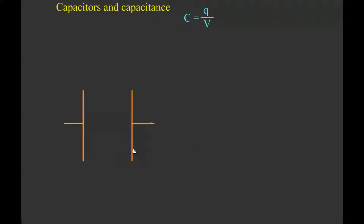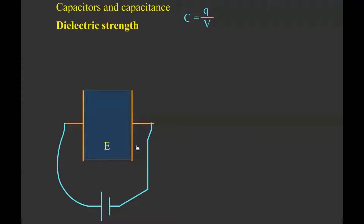Look here — this is the capacitor. It consists of two parallel plates. These two are the terminals. This is the source of battery or source of EMF. When this capacitor is connected to this battery, these two plates will get charged. This terminal is positively charged because it is connected to the positive terminal of the battery, and this is negatively charged because it is connected to the negative terminal of the battery.